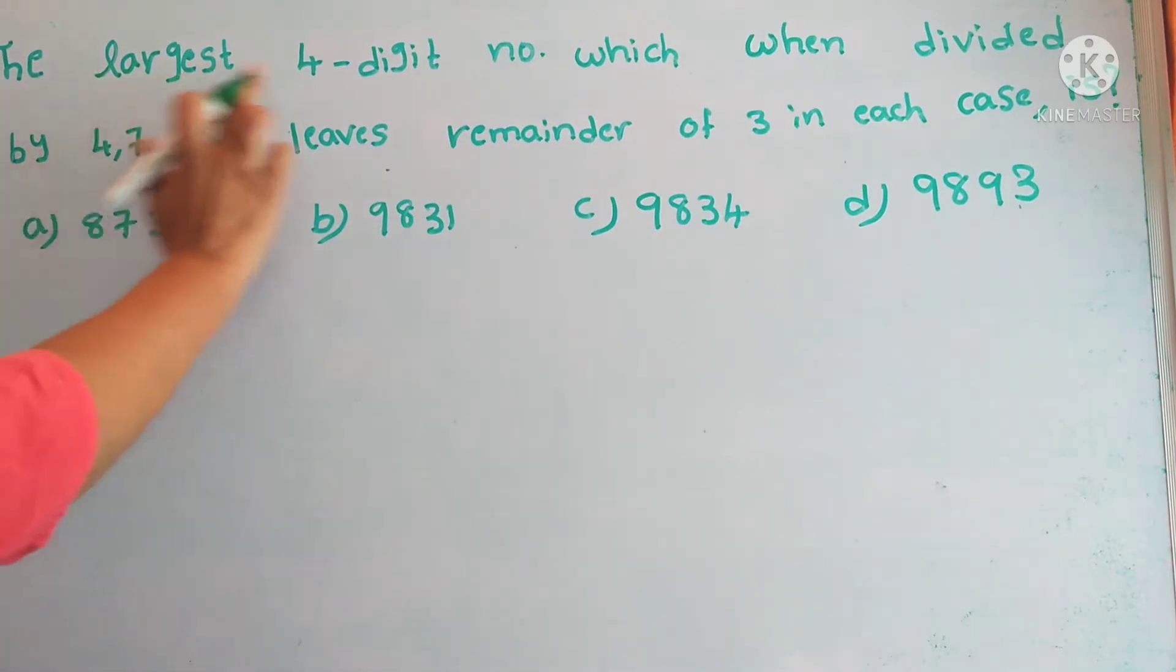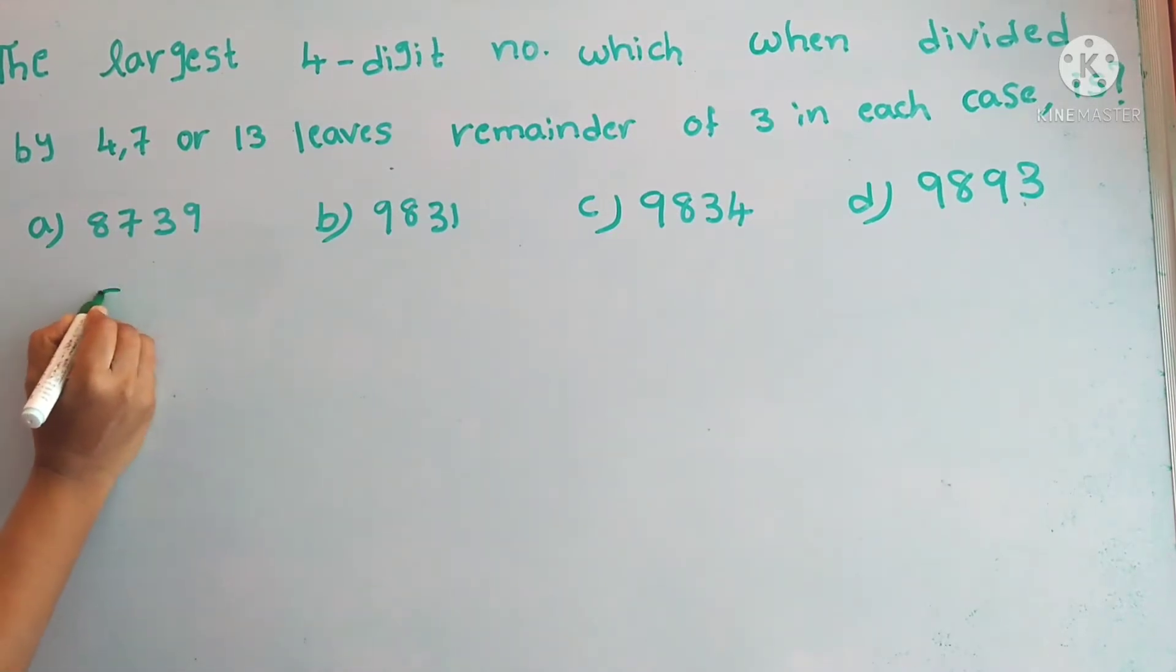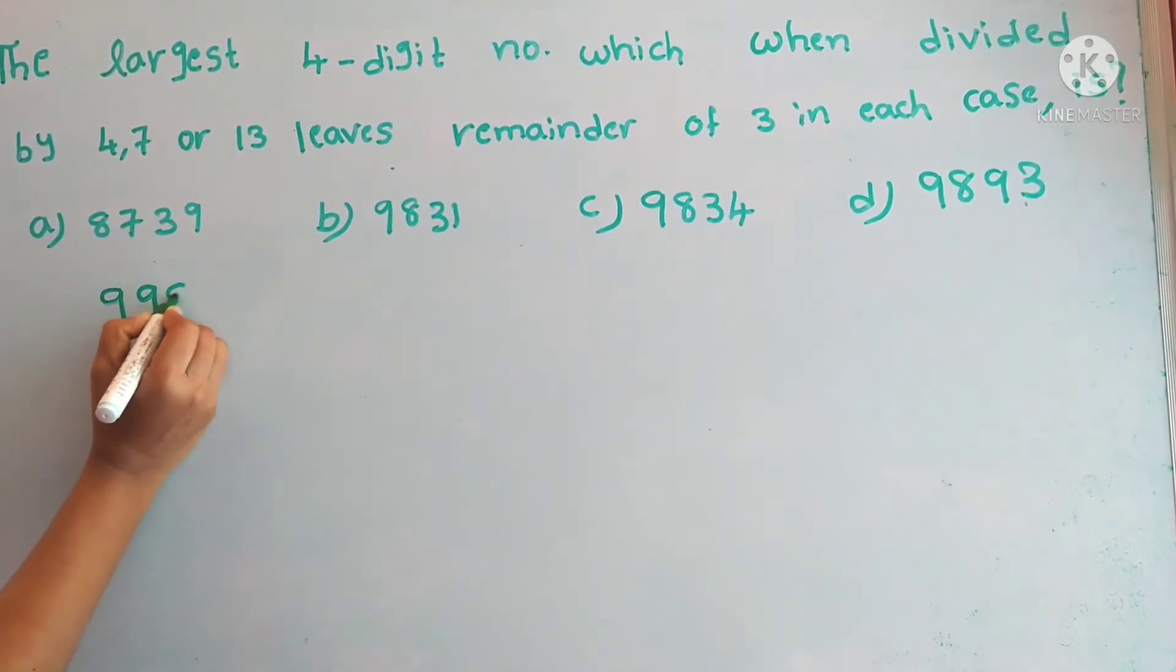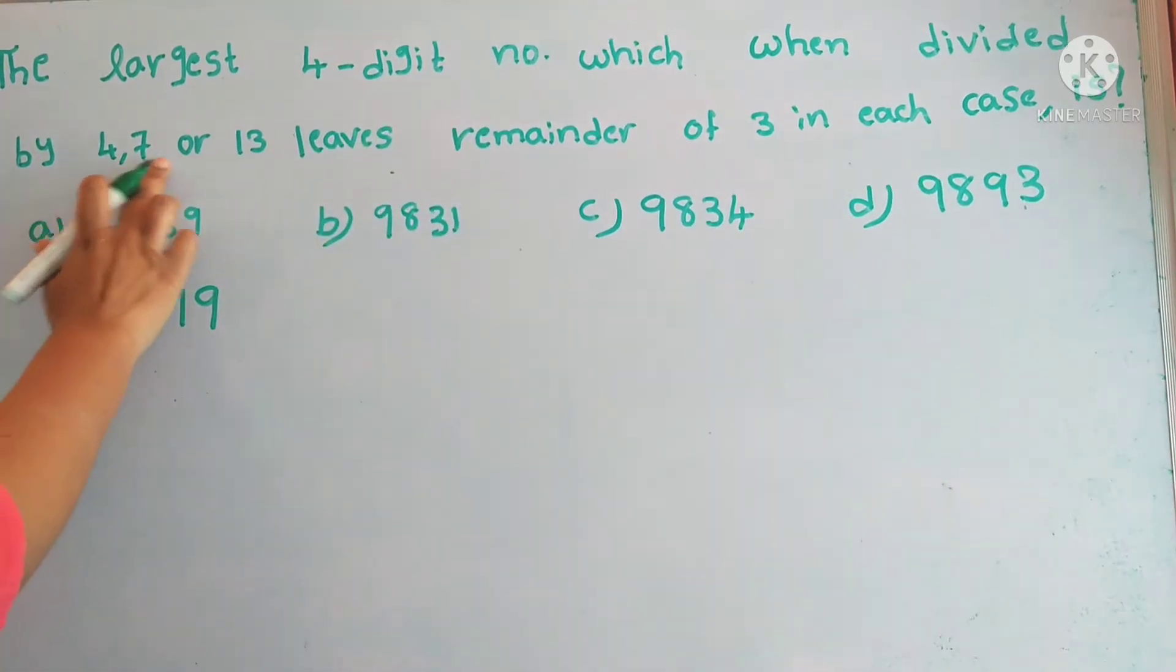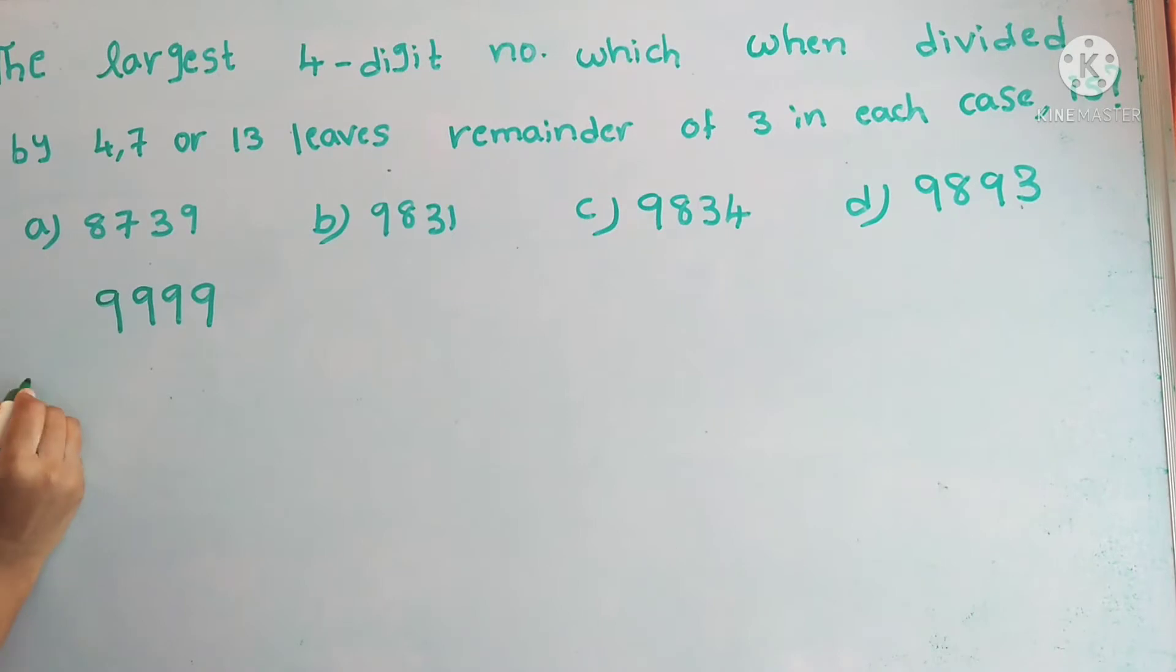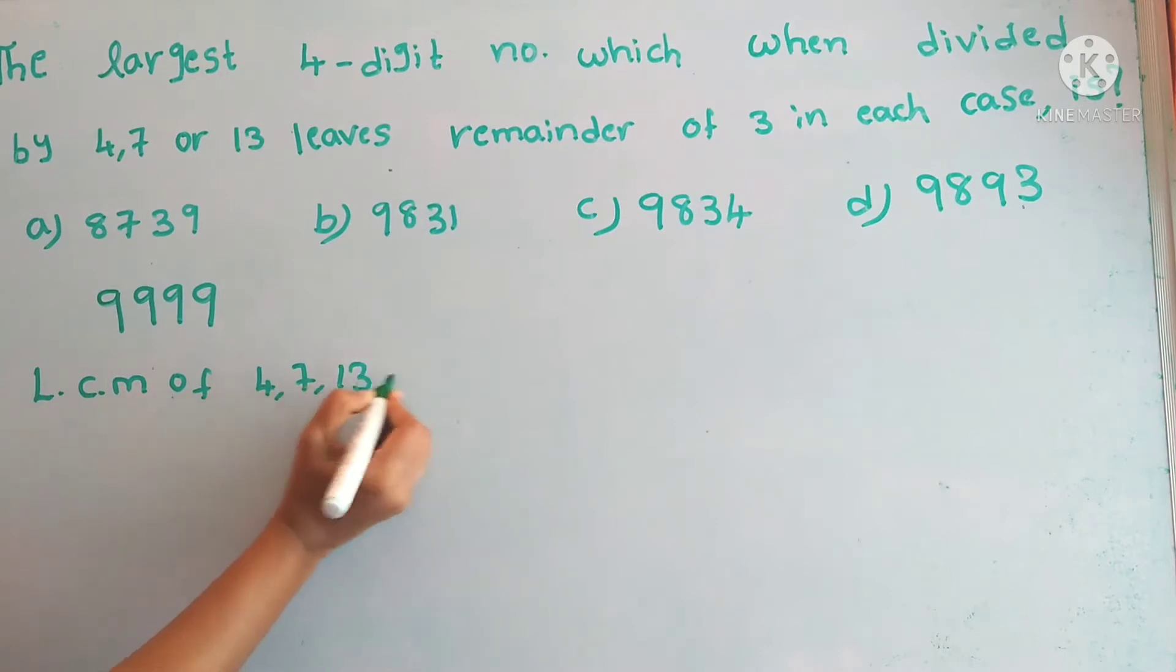Here we need to find out the number. We know that the largest four digit number is 9,999. From the question, when divided by 4, 7, 13 leaves remainder, so now we need to find out the LCM of 4, 7 and 13.